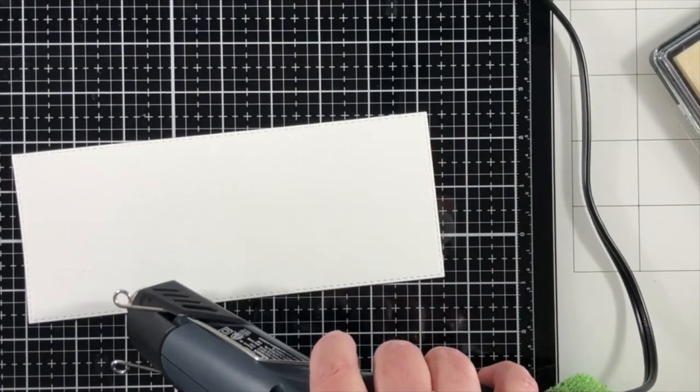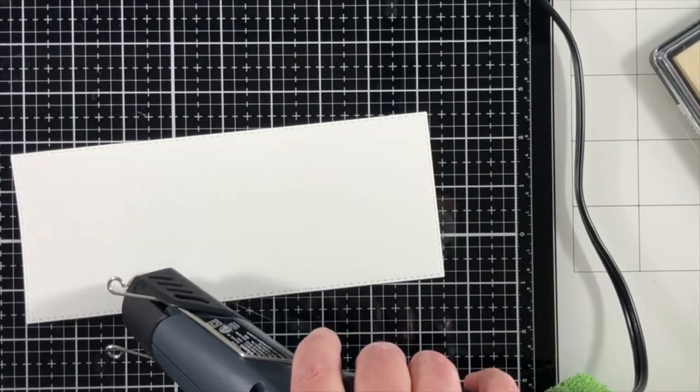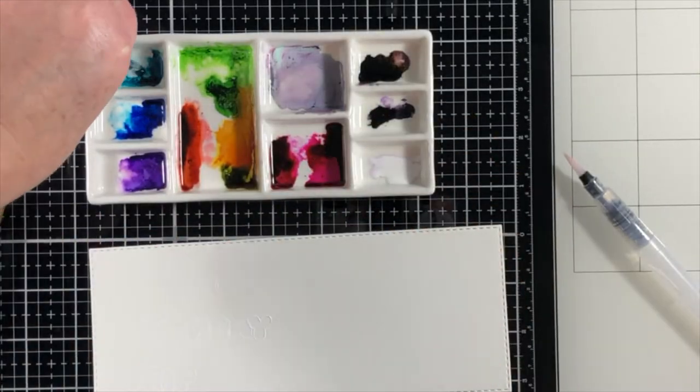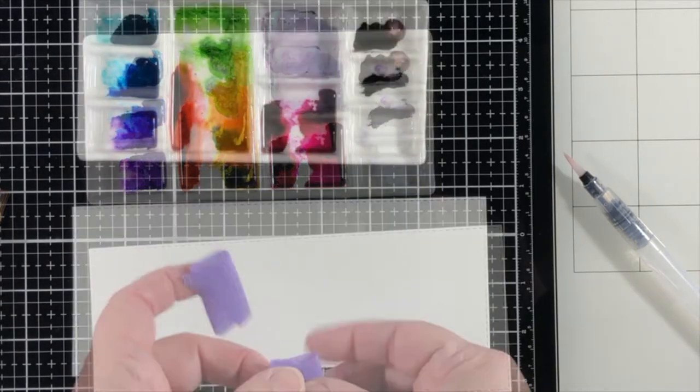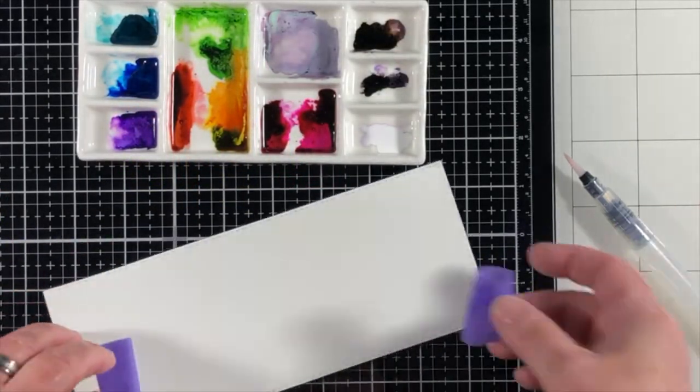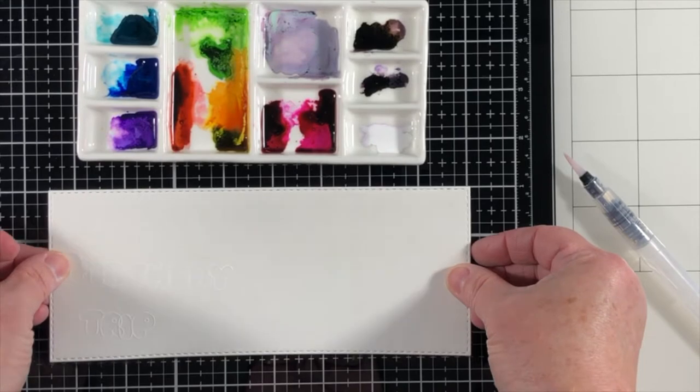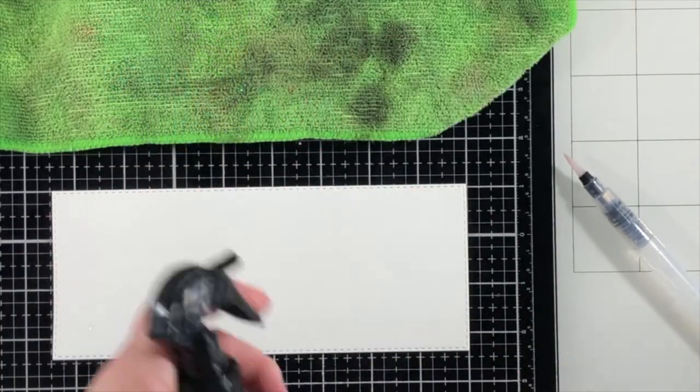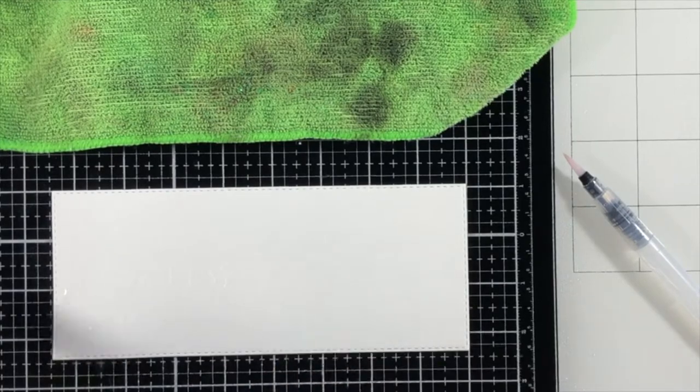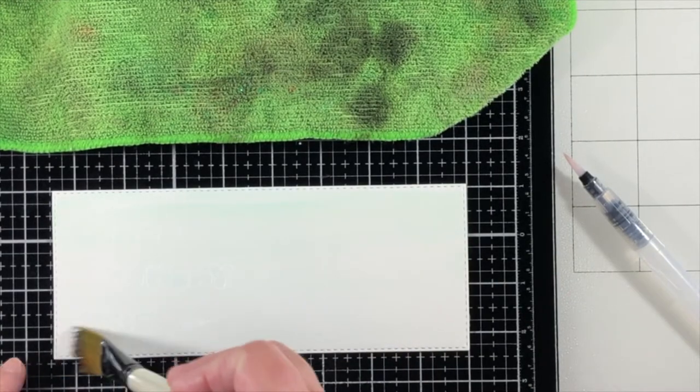He will be 10 years old in a few days, and he loves whales. I happen to have one whale stamp in my collection. I should have more, but I've only got one. And I am going to stamp all of the letters that say happy birthday trip. And I added some sprinkled white embossing powder and heat set that.